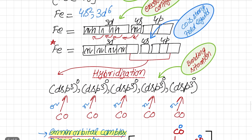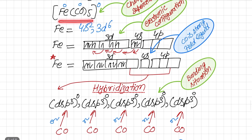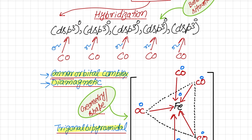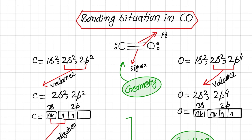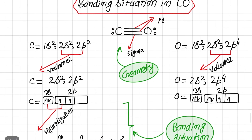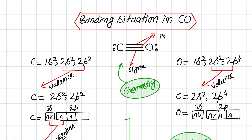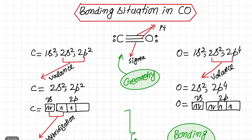Now we will see in detail which orbital of carbonyl is actually overlapping with the empty dsp3 hybrid orbital of iron. The bonding situation in carbonyl shows that carbon and oxygen have a triple bond, with one lone pair present on carbonyl carbon and another lone pair on carbonyl oxygen. Since it has two atoms, we consider carbon as the central atom, so hybridization takes place on carbon.